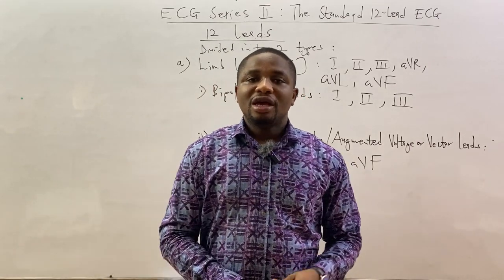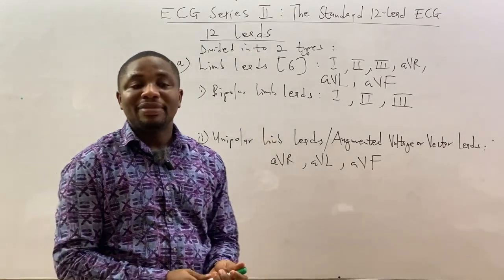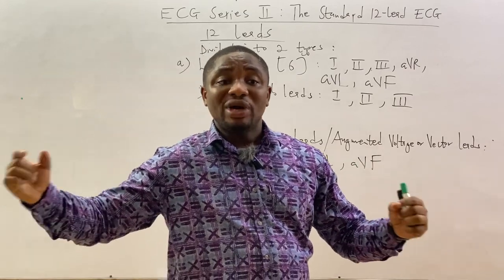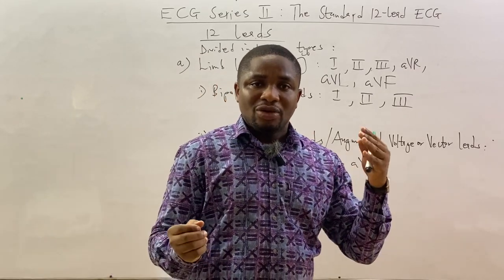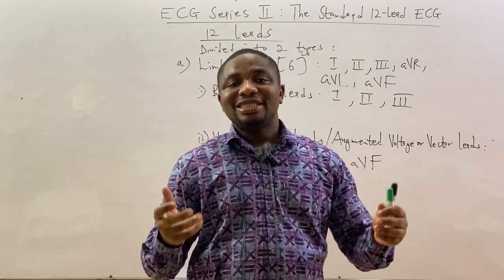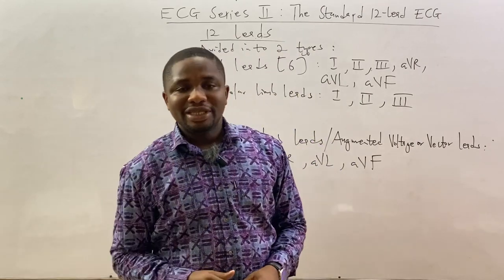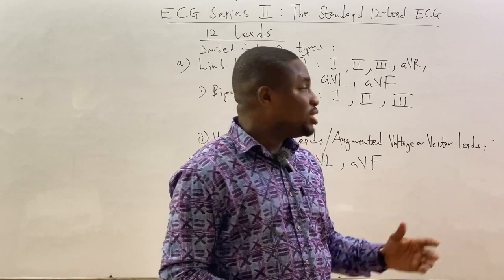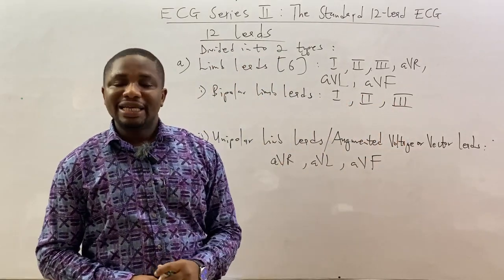The unipolar limb leads are also known as the augmented voltage leads or augmented vector leads. The bipolar limb leads are so called because at the two ends of the lead, one end is positive and the other is negative. The bipolar limb leads are lead one, lead two, and lead three.